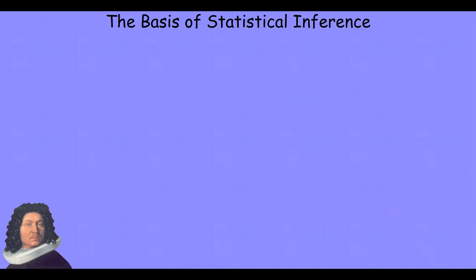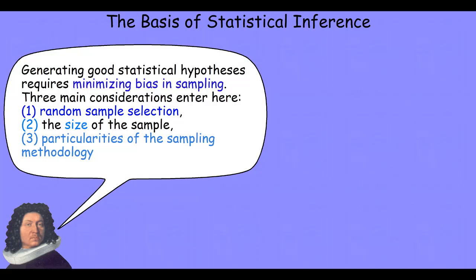So, what's the basis of that statistical inference strategy? Well, the basis of it is a relationship between our sample and our population. And so, statistical inference is, in part, based upon getting a good, unbiased sample. Minimizing bias in our sample. And there are three main considerations when you think about how to gather a sample that minimizes the bias in that sample.